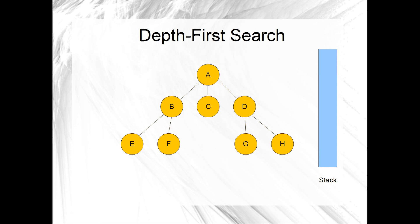Okay, so that brings this video to a close. To summarize, we talked about what the depth-first search algorithm is for, its efficiency, the fact that it uses a last-in, first-out stack data structure, and that it is a backtracking algorithm. If you found this video helpful, please consider clicking that like button and subscribing to the channel. If you are a student of mine, please feel free to shoot me an email if you have any questions or stop by my office. Thanks for watching, and we will catch you next time.